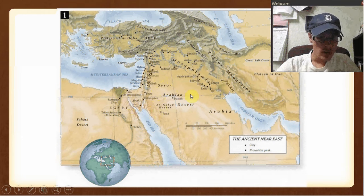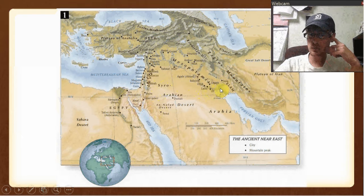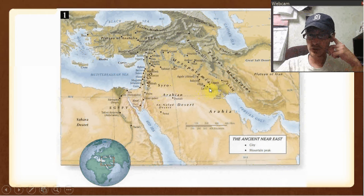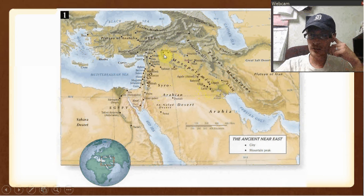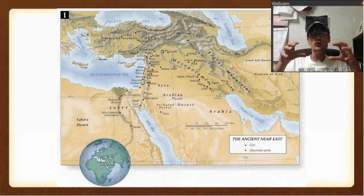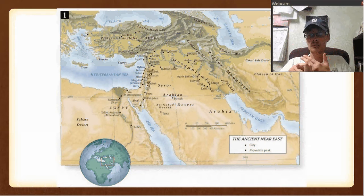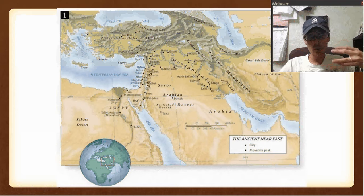The events of the Bible really start with specific places when we get to Abraham. Abraham came from right here around the city called Ur. He traveled up to Haran. People back then didn't have stores, so civilizations built around water and good farmland. Their life really depended on it.